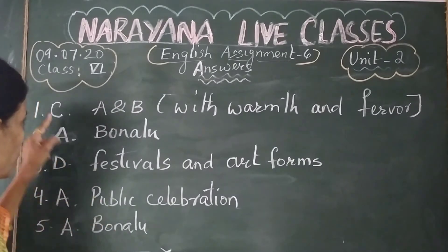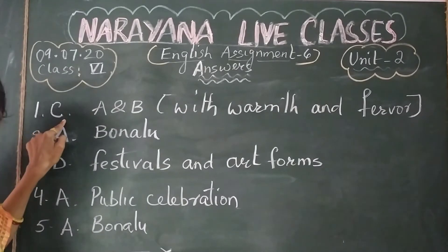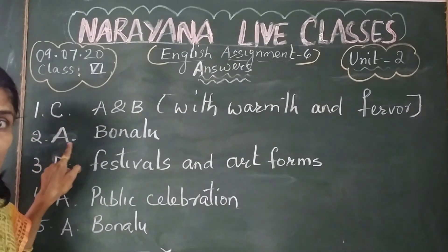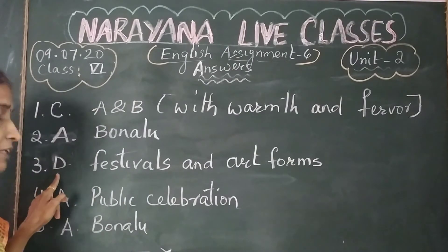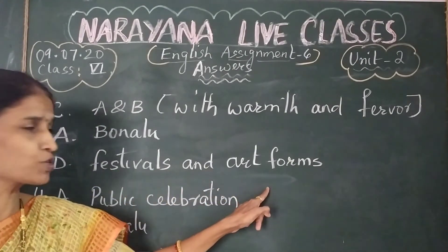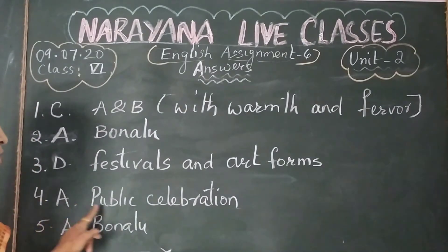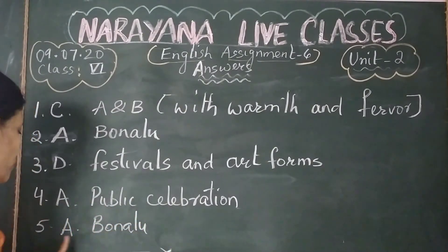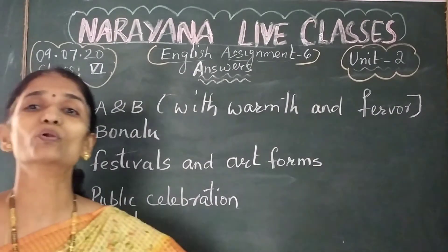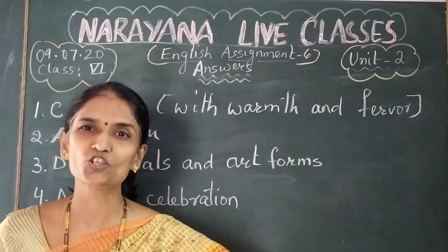So let me repeat the answers. First question: option C. Second question: option A, that is Bonalu. Third question: option D, that is Festivals and Art Forms. Fourth question: option A, Public Celebration. And fifth question: option A, that is Bonalu. With this we complete the discussion of the key.